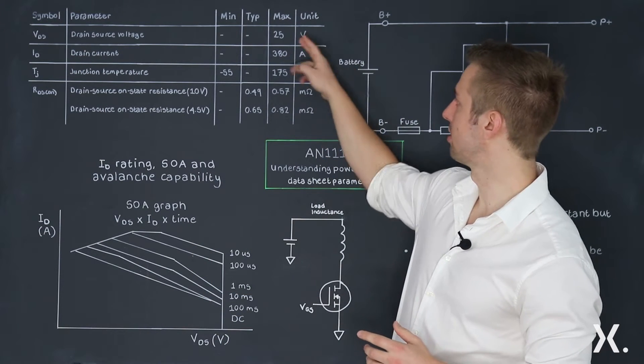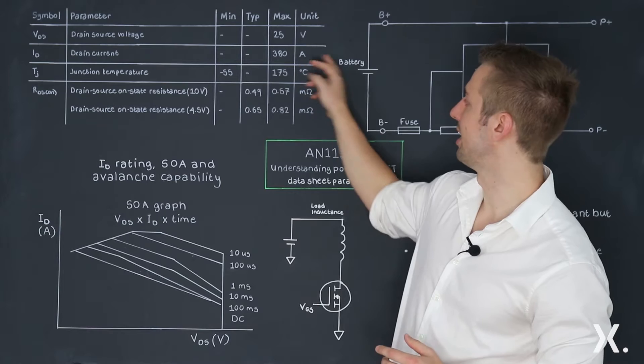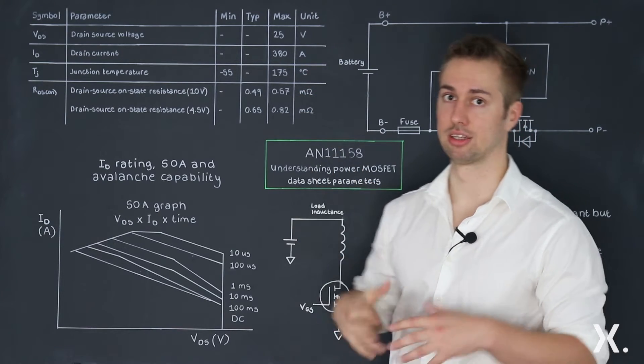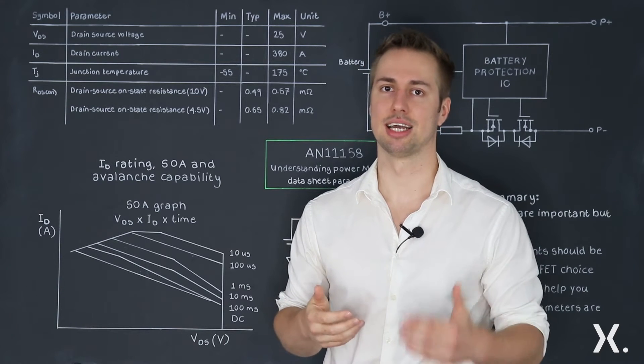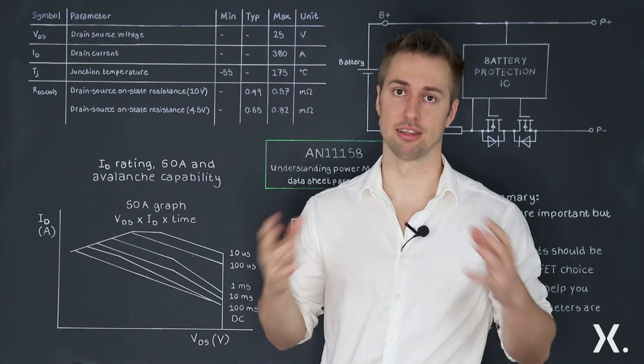For example, 25 volt, 380 amps, and a certain set of milliohms. These parameters are being chosen because they make sense and they're simple to compare against other devices.